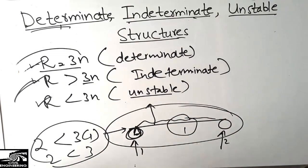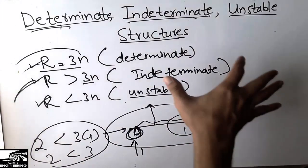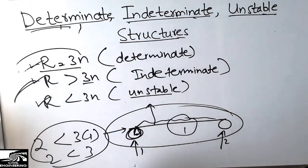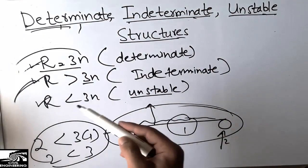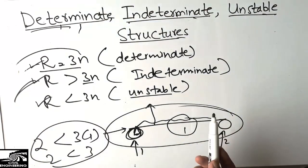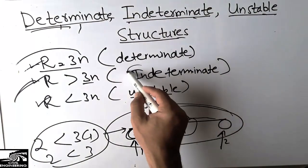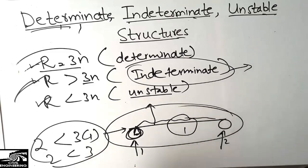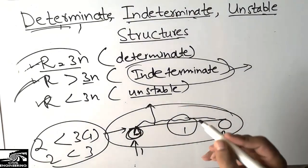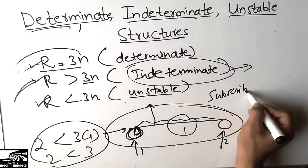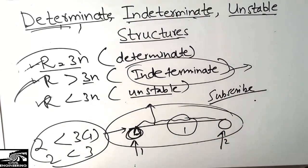That covers how to find determinate, indeterminate, and unstable structures. It is important to understand these types because they are widely used in practice. In practice, most real structures are indeterminate because they have more supports and more reactions. If you have any questions, please comment below, and don't forget to subscribe to our channel for more civil engineering updates. Thank you.